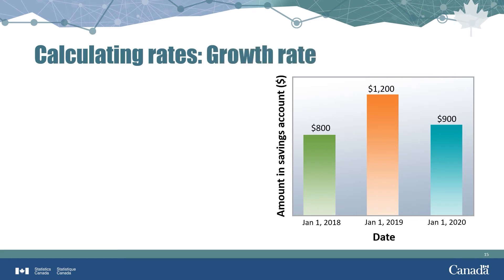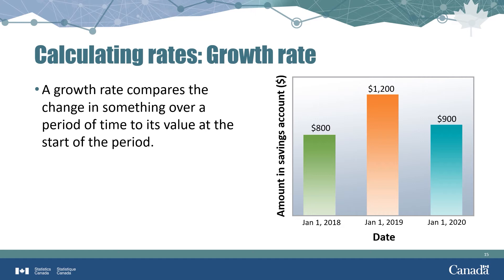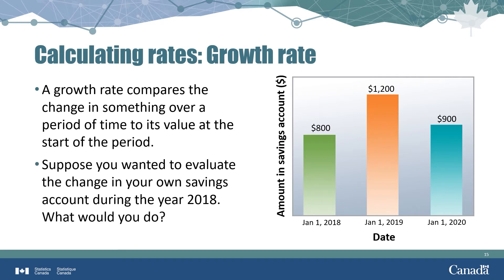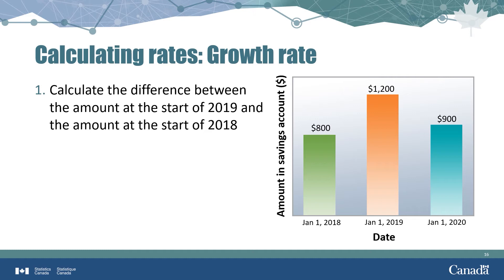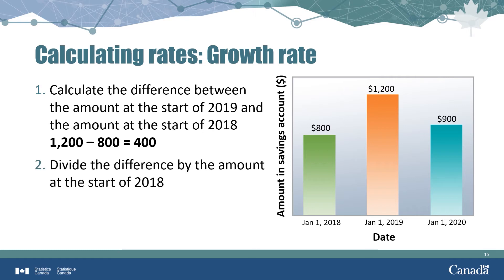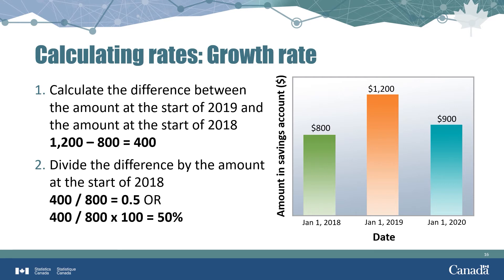One practically useful type of rate is a growth rate. A growth rate compares the change in a measurement over a period of time to the value at the start of the period. To calculate the growth rate of a savings account during 2018: take the amount at the start of 2019 ($1,200), subtract the amount at the start of 2018 ($800), giving a difference of $400. Divide $400 by $800 to get 0.5, or 50% — the account increased by half its initial value during 2018.